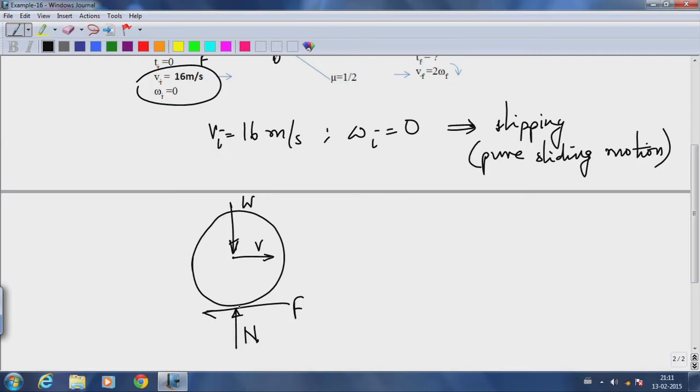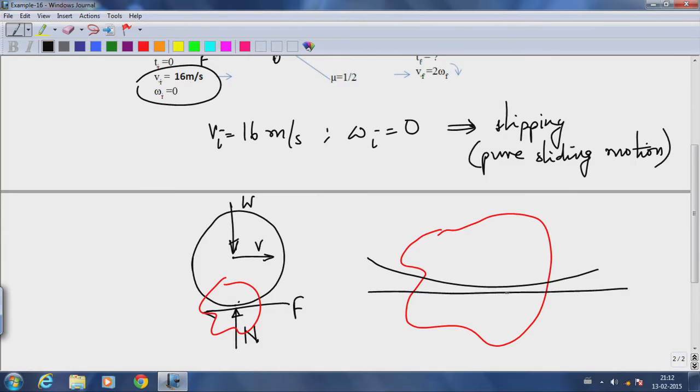At this point of contact, if I now mark two points, I will try to zoom in here and draw a magnified picture between the table and the cylinder.